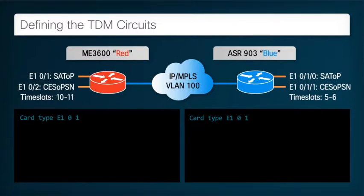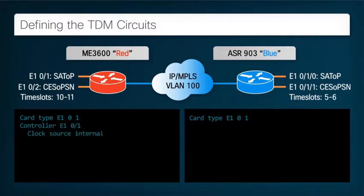Now we configure the first E1 controller with the appropriate clocking direction. For Router Red, the clocking is given to the TDM device, so the clock source is internal. For Router Blue, the clocking comes from the TDM equipment, so the clock source is line.